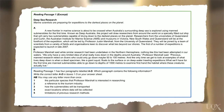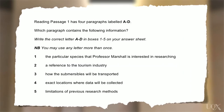Let's look more closely at the questions now. Always remember to check the instructions first. In this example, the instructions tell you that the reading passage is divided into four parts. These parts are labelled A, B, C, or D.